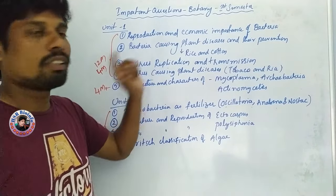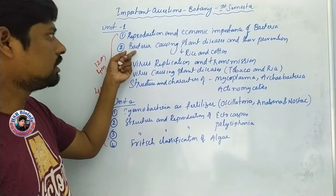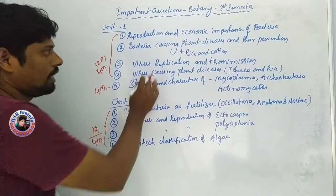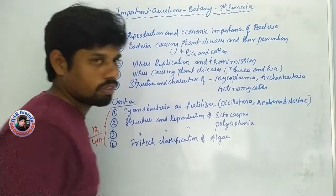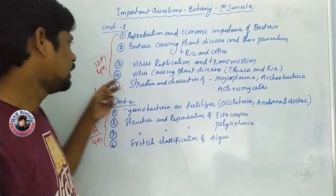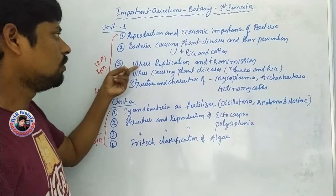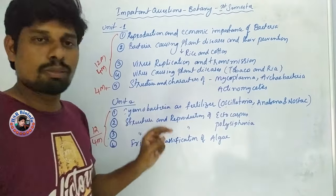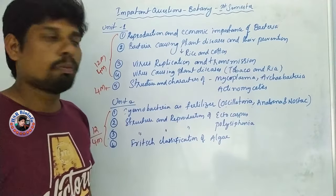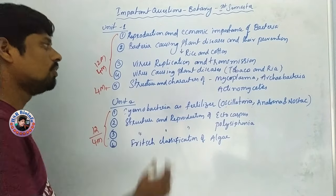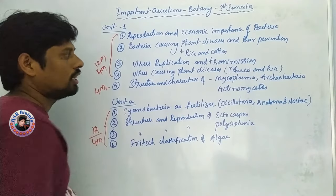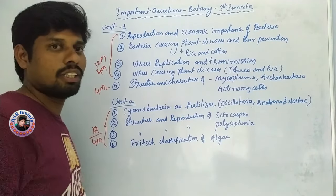Bacteria diseases in rice — rice bacterial blight is a bacteria disease. This is a 4-mark topic. Next, we have virus replication and transmission as a topic. The virus can replicate and transmit, which is a 2-mark question. Virus-causing plant diseases, especially tobacco and rice, can be answered for 4 marks.